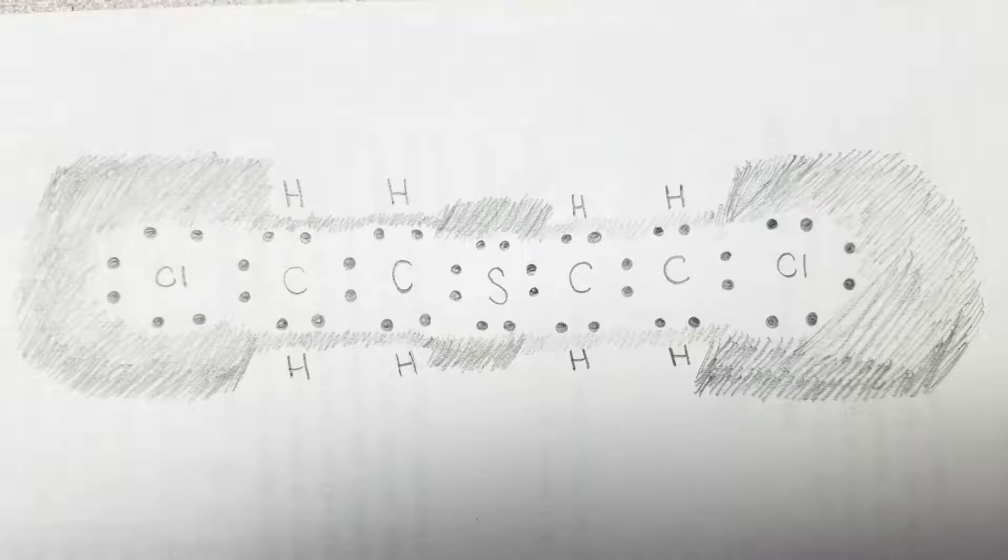Since electrons are the key to creating bonds between atoms, the Lewis dot structure allows us to predict how bonds will form with our molecule. We will later see that sulfur mustard, as a chemical weapon, functions by bonding to some very important molecules in the human body.